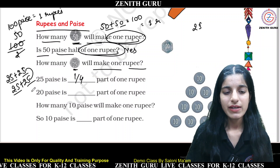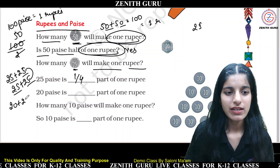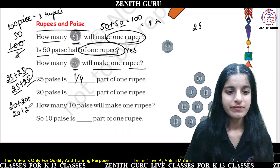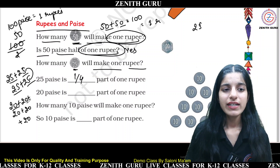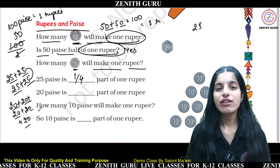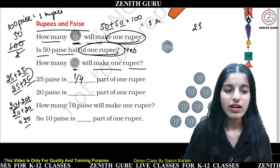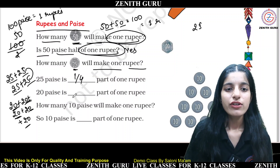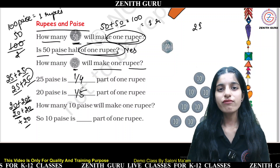Now talking about 20 paise — 20 plus 20 plus 20 plus 20 plus 20: that is 20, 40, 60, 80, and 100, which is equal to 1 Rupee. So there are 5 parts total. Therefore, 20 paise is the 1/5th part of 1 Rupee.